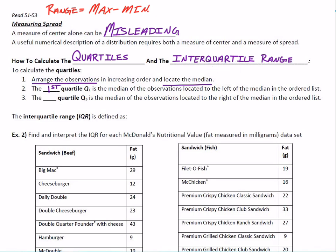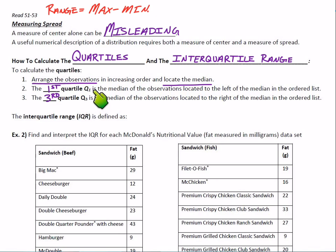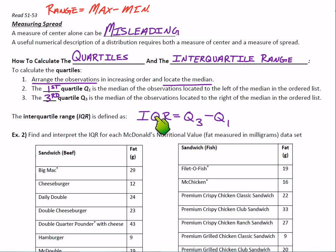The interquartile range is a comparison between two quartiles — specifically the first quartile Q1 and the third quartile Q3. Q1, the first quartile, is the lower 25th percentile, and Q3 is the 75th percentile. We don't talk about Q2 because we already have a name for it — that's the 50th percentile, which is exactly what the median is. The interquartile range, or IQR, is defined as simply Q3 minus Q1. The math behind that is actually really simple.